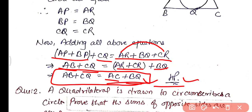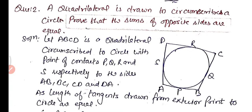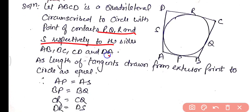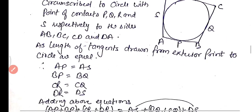Question number two: a quadrilateral is drawn to circumscribe a circle — prove that the sum of opposite sides are equal. The quadrilateral ABCD circumscribes the circle with points of contact P, Q, R, and S on sides AB, BC, CD, and DA respectively. Since tangents from exterior points are equal: AP equals AS, BP equals BQ, CR equals CQ, and DR equals DS.